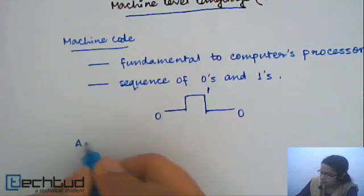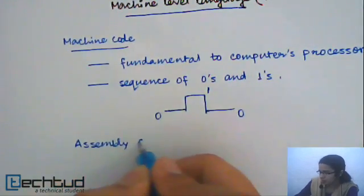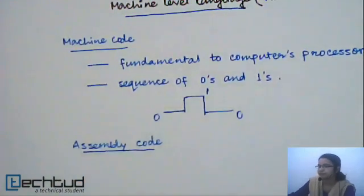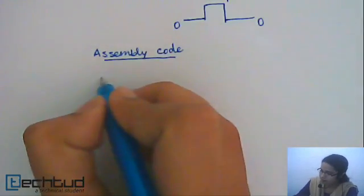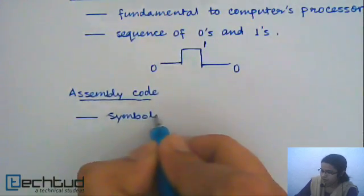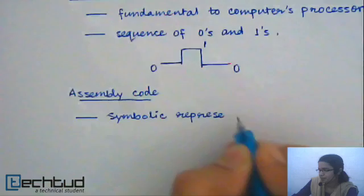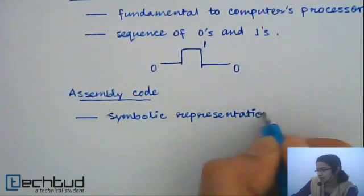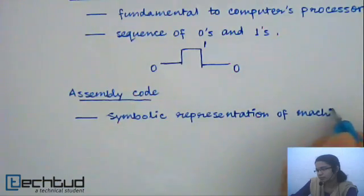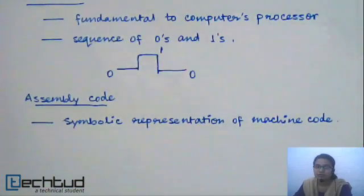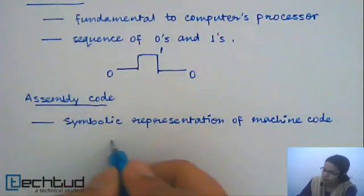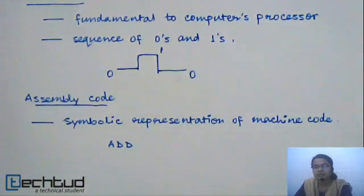Next we have assembly language code. In assembly language, it is a symbolic representation of machine code. Machine code is a sequence of 0s and 1s, so if we want to perform some operation — maybe like addition — assembly code assigns some symbols like 'add' to this operation. But it is also very difficult for humans to understand.